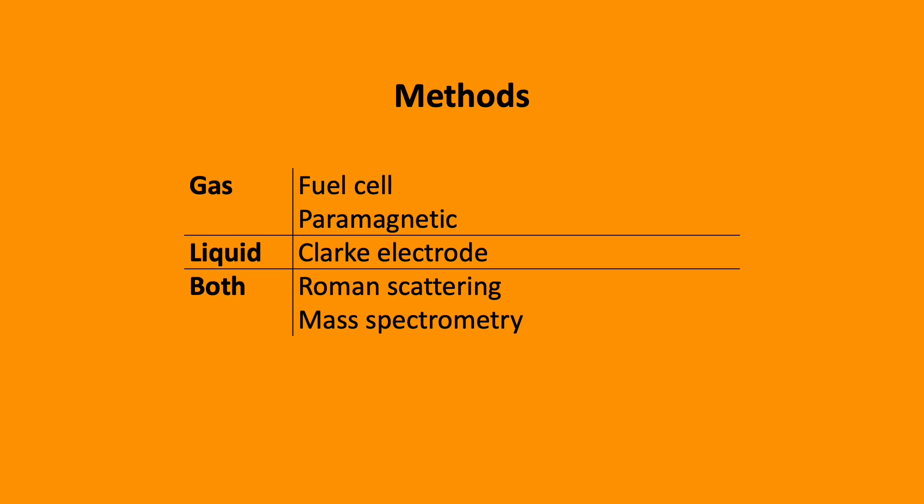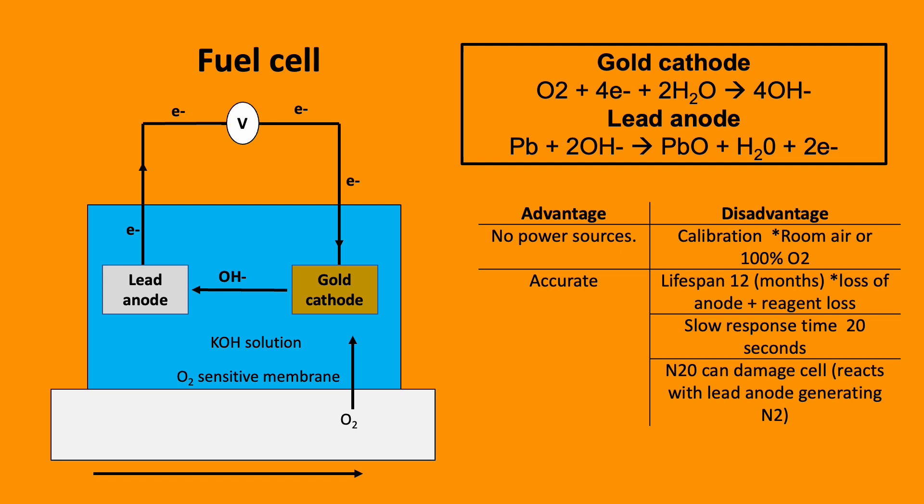Other methods include Raman scattering and mass spectrometry. The fuel cell is a device composed of a lead anode, gold cathode, potassium hydroxide solution, and O2-sensitive membrane. It's located in the inspiratory limb of the breathing system.